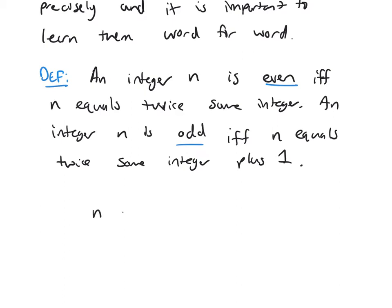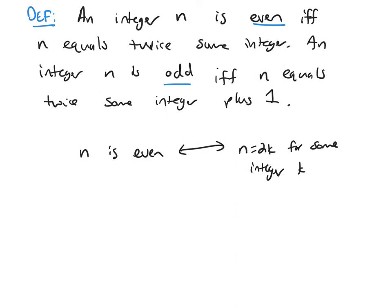So let's summarize. n is even means n equals 2 times k, twice some integer, 2 times k for some integer k. And n is odd means n equals 2k plus one for some integer k.